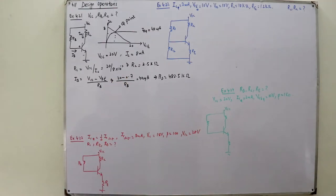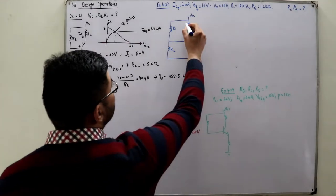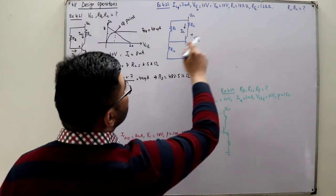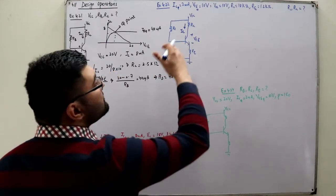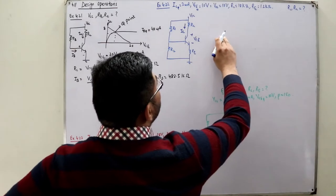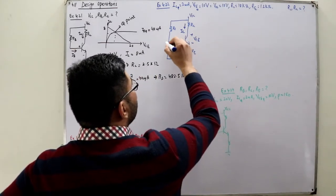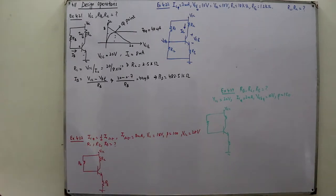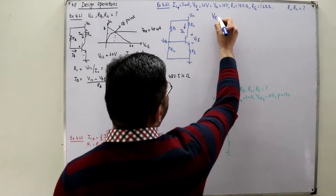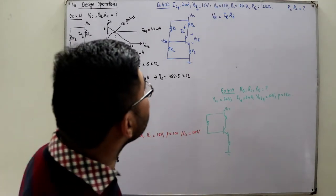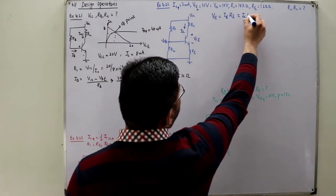In the second example, ICQ is given — meaning IC is given — along with VCE, VCC, R2, and RE. IB is this current. This is a voltage divider configuration, so we use the Thevenin theorem. The voltage at the base is not directly given, so first find the voltage at the emitter: VE equals IE times RE. Since IE is approximately equal to IC, we substitute.